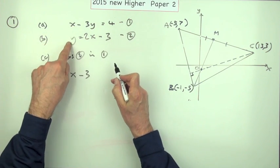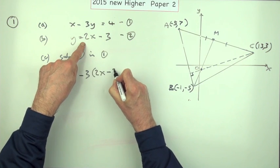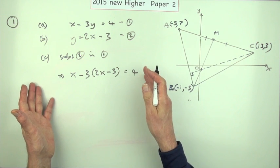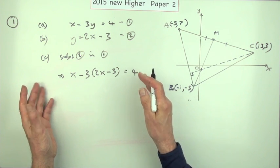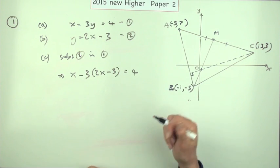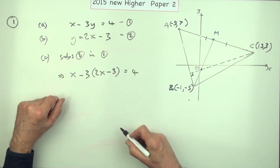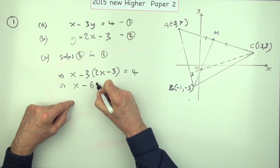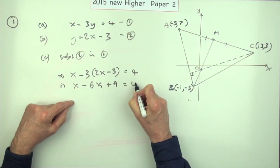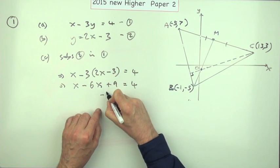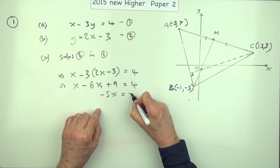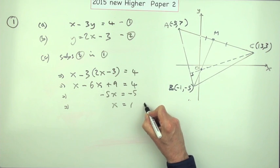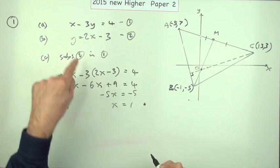Now there's no marks yet. The way they've allocated the marks for this part, for these two marks, is one for x, one for y, whichever way you find them. So I'll have to go a bit further before I get my mark. x minus 6x plus 9 equals 4, -5x equals, taking that across, -5. So x equals 1. That's a mark. Feeding it back in: substitute x equals 1 in equation 2.